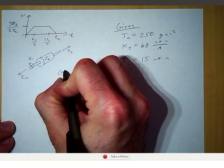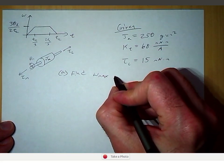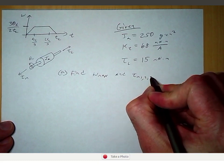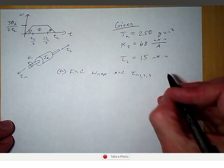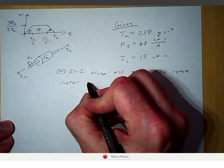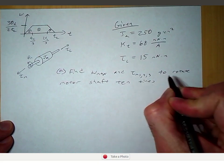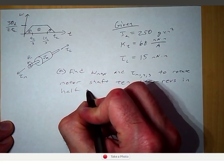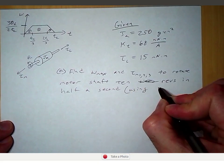For part A we want to find the maximum velocity omega_max, and the motor torque in periods one, two, and three — in order to rotate the motor shaft ten revolutions in half a second, using an equal parts trapezoidal velocity profile. That means each of the three portions of the velocity profile take up an equal amount of time.